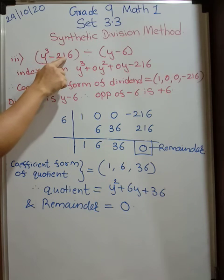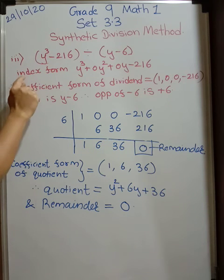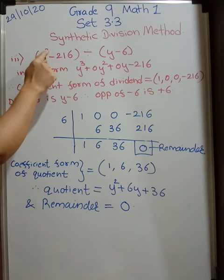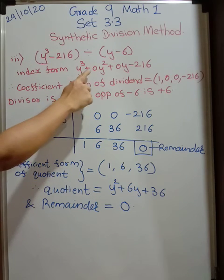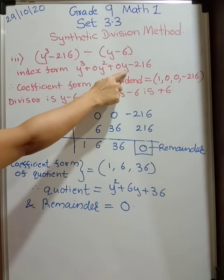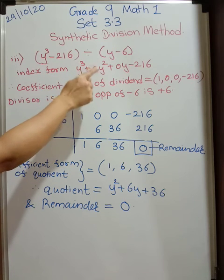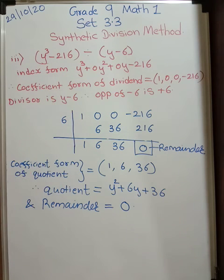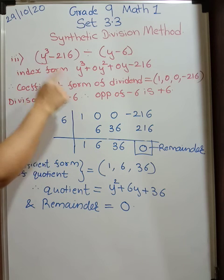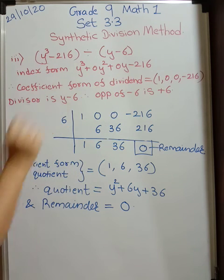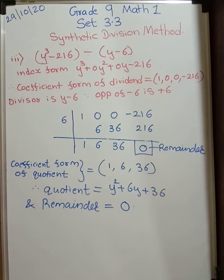Let's go to the third problem. y cube minus 216. Now look here. We need to write your index form because after cube, none of the y terms are there. So we have to take y square as 0 and y also as 0. So your index form is y cube plus 0 y square plus 0 y minus 216. And therefore coefficient form of this dividend becomes 1, 0, 0 and minus 216.